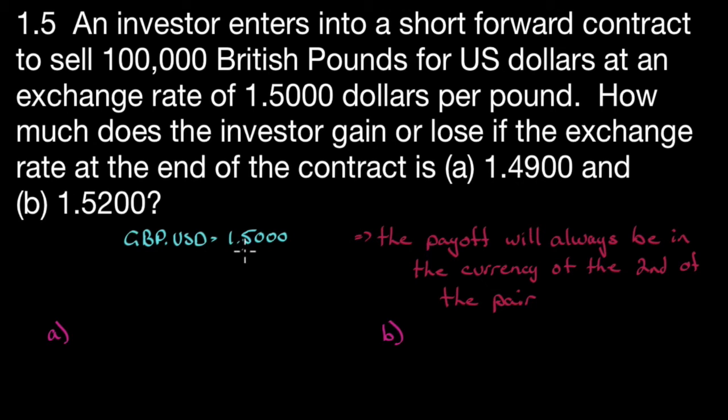Currencies are always quoted in pairs with the first pair being a one. So one British Pound buys 1.50 US dollars, and that's how we read all currency quotes. When I see 1.50, I want to put it in a term that I can understand: one British Pound buys a dollar 50 US dollars. Now when we're trading currencies, we're really just trying to figure out the gain or loss, but we need to be specific. The question says how much does the investor gain or lose if the exchange rate at the end of the contract is 1.49 and 1.52? You cannot just give me a number. You must give me a number in the proper currency.